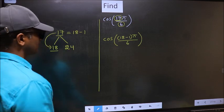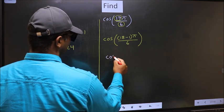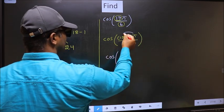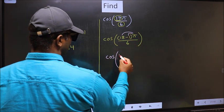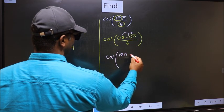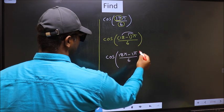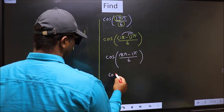Next. Cos. Now you should open up the brackets. You get 18π minus 1π by 6.